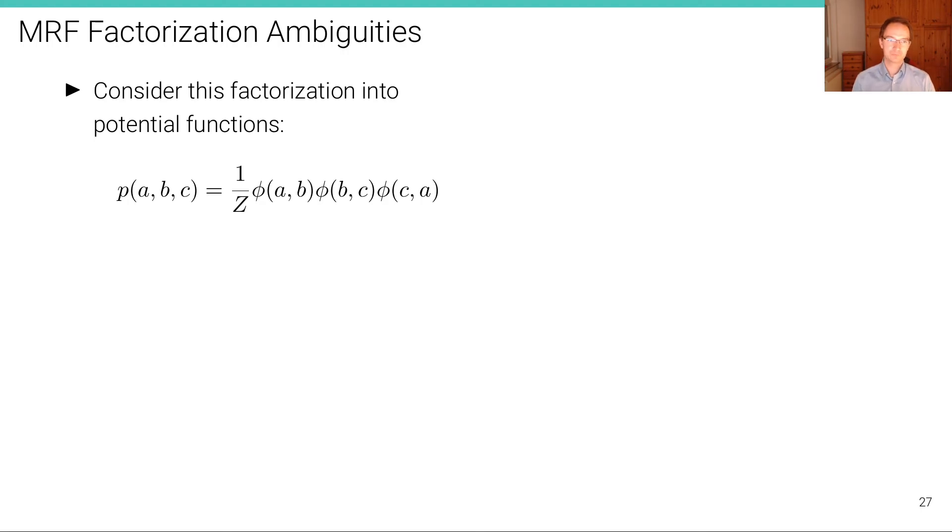Why do we need factor graphs? Let's consider MRFs again. Consider the following factorization into potential functions, where we have a joint distribution written as one over the normalization constant times three different potentials: one over A and B, one defined over the variables B and C, and one over C and A.